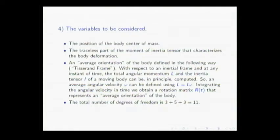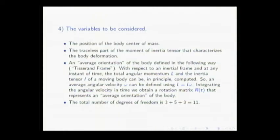The second variable is the traceless part of the moment of inertia tensor, which characterizes the body's deformation. I don't care about all the complicated details of the Earth — the ocean tides, atmospheric tides, solid tides, the mantle, the solid core, all these heterogeneities. I forget about everything. For me, the shape of the Earth is completely characterized by this moment of inertia tensor — the traceless part, since the trace is constant. You can get the trace from published data on the Earth's inertia tensor.